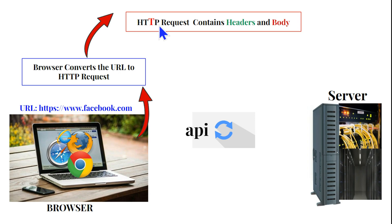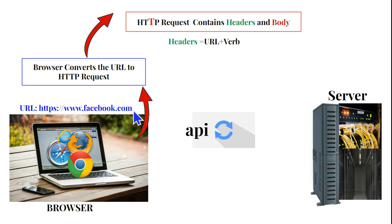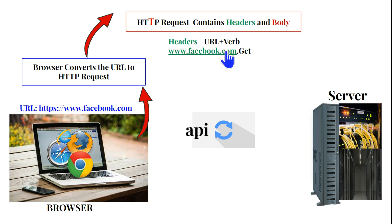This HTTP request contains two different things: the header and the body. The header contains the URL you typed — www.facebook.com — and a verb. In this case the verb is GET, meaning 'I would like to get something from Facebook.' So the header includes the URL and the verb GET.